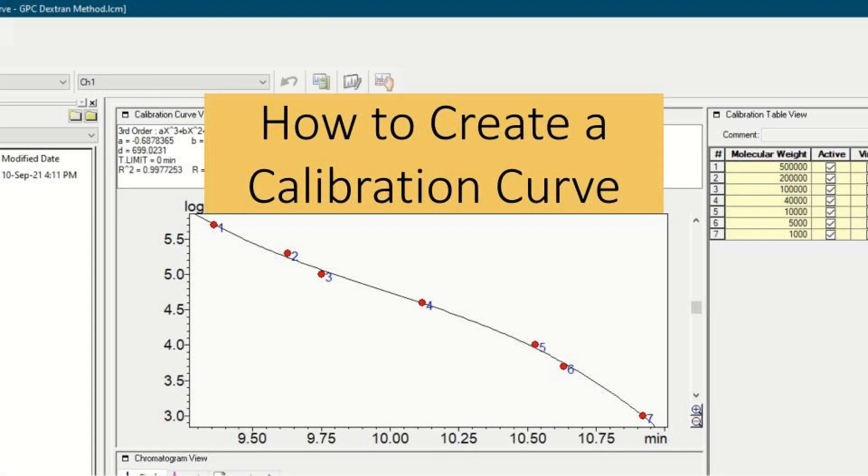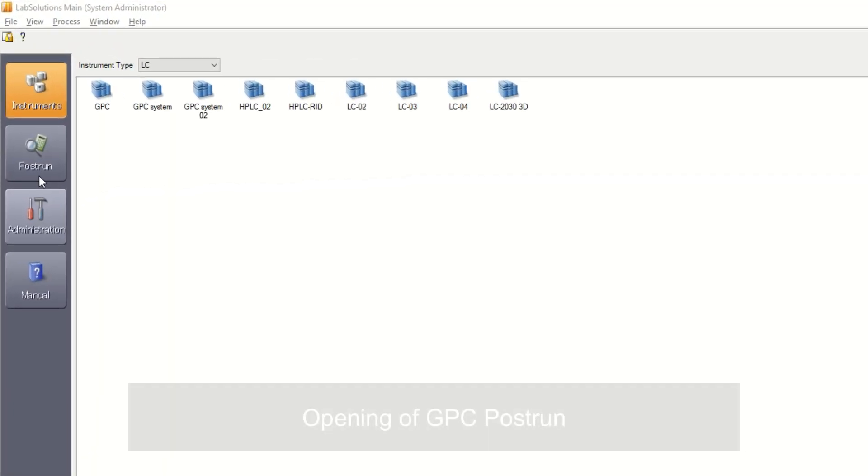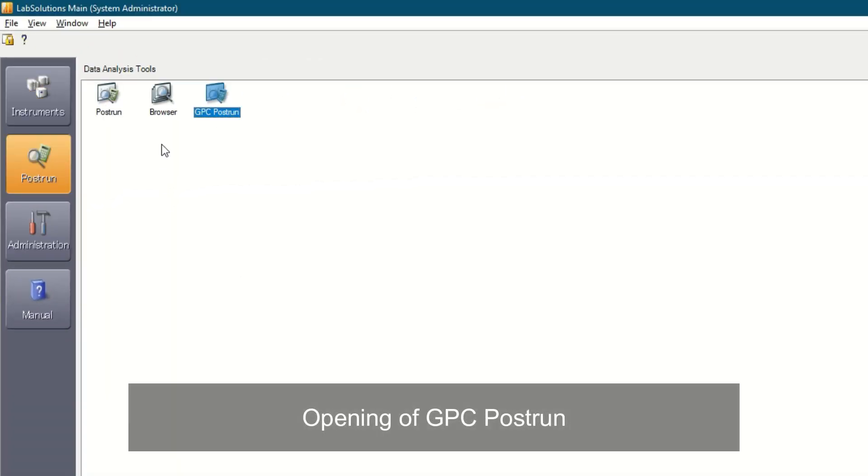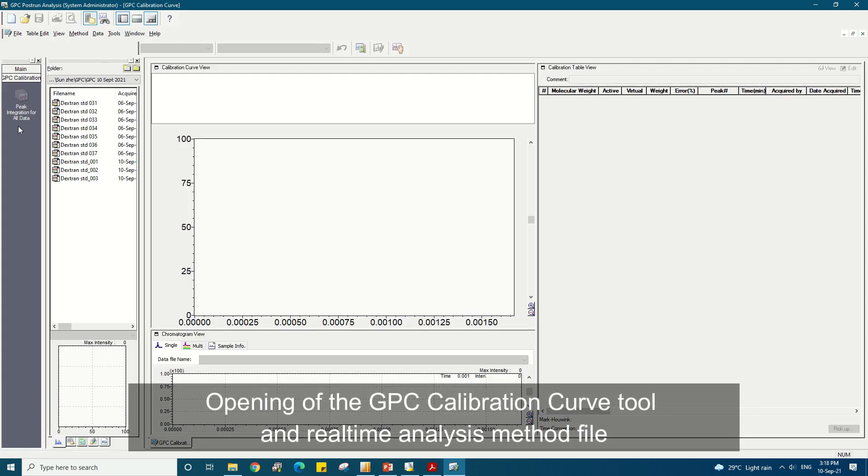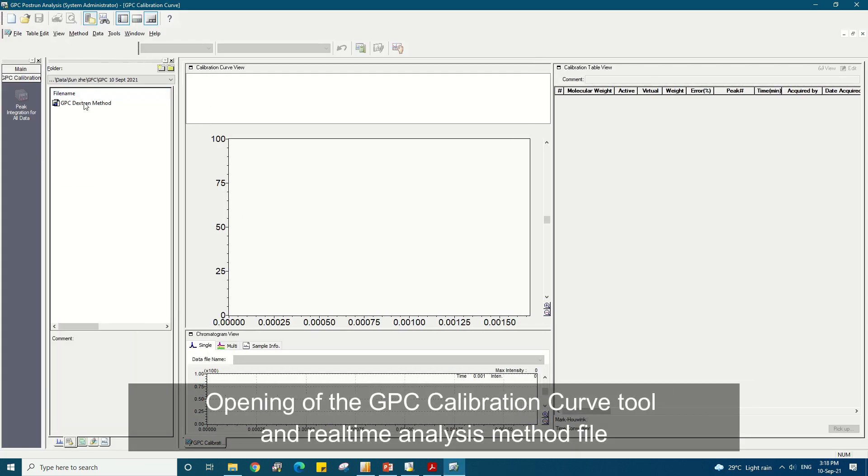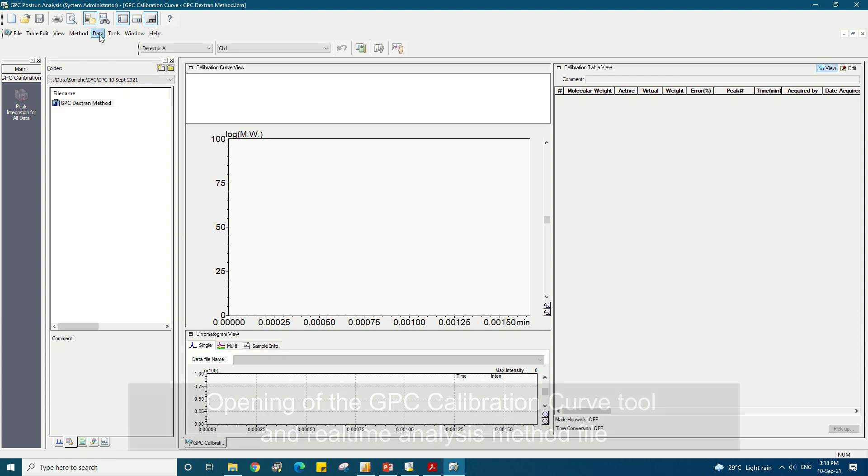After the real-time batch run is completed, we can start creating the calibration curve. In the post-run window, select the GPC post-run icon and open it. Open the GPC calibration curve tool from the assistant bar and select the method file used in the real-time analysis.